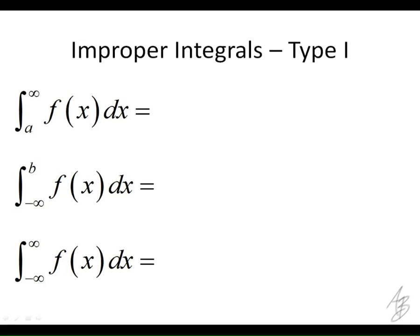Type I improper integrals come in three different categories. The idea is we're finding the area under a curve from some constant to infinity, from negative infinity to some constant, or from negative infinity to positive infinity. These are called improper because we're taking the integral as one of the limits approaches infinity. Since infinity is not a number — it's a concept — we're integrating from a to infinity, finding the area between a and an unbounded number.